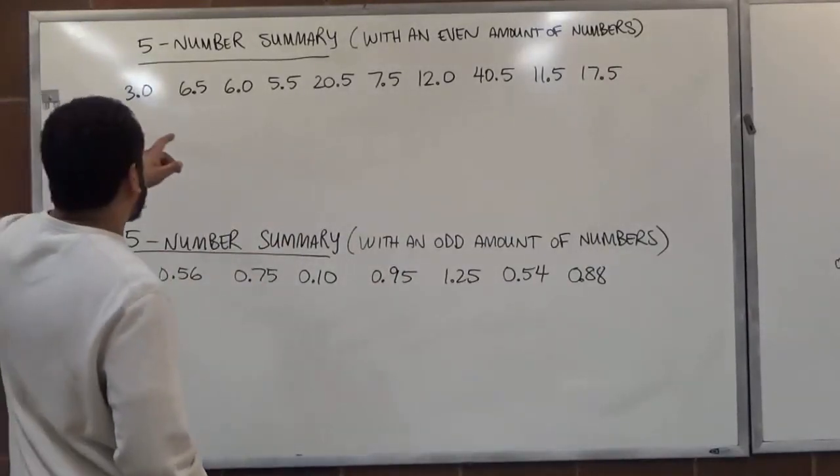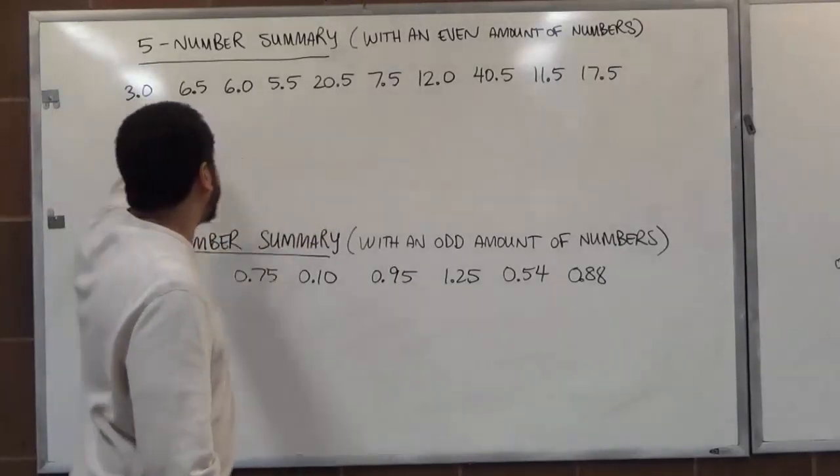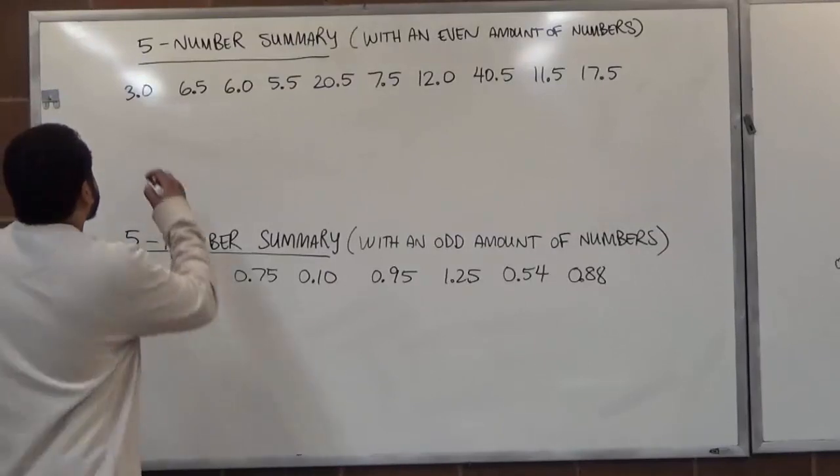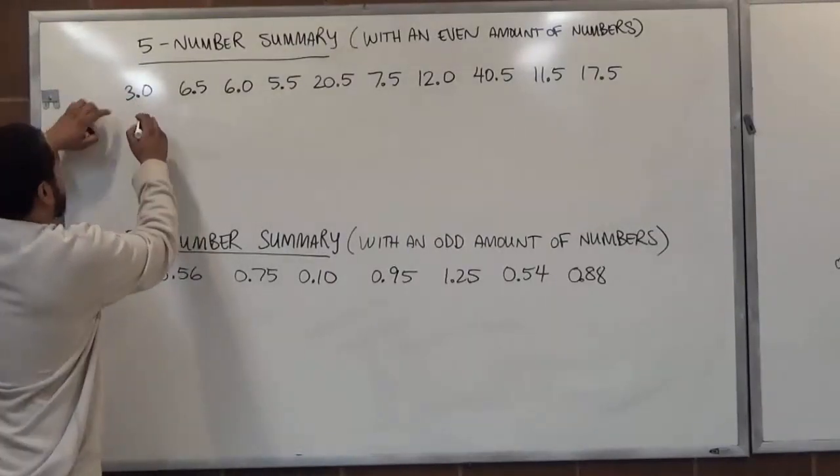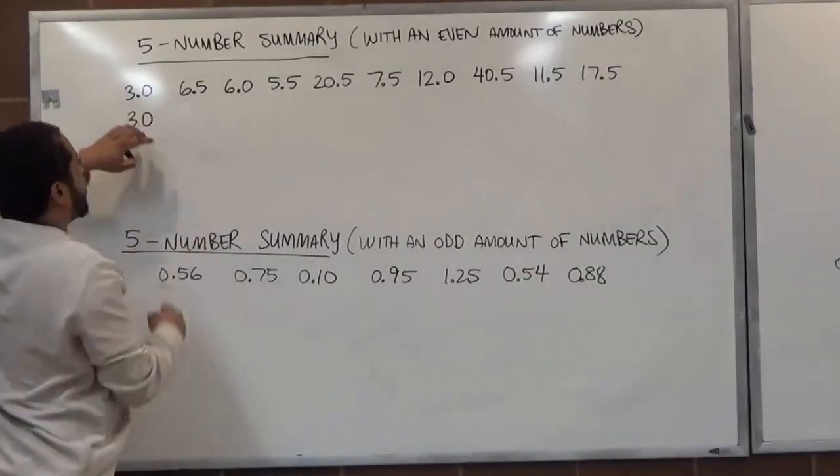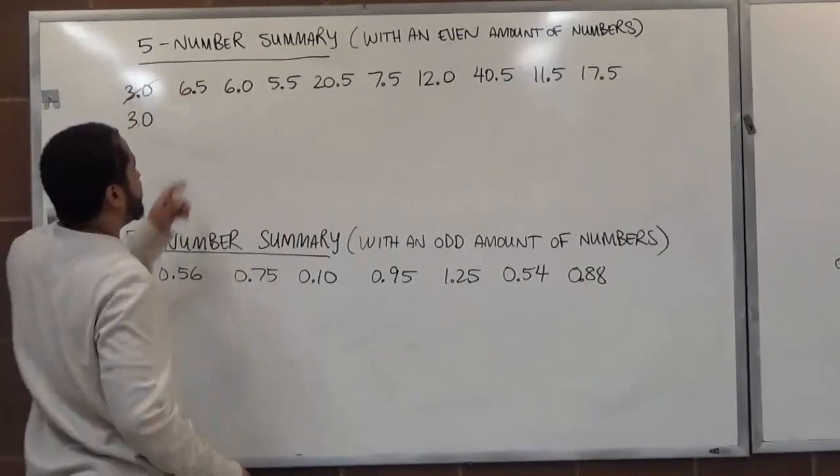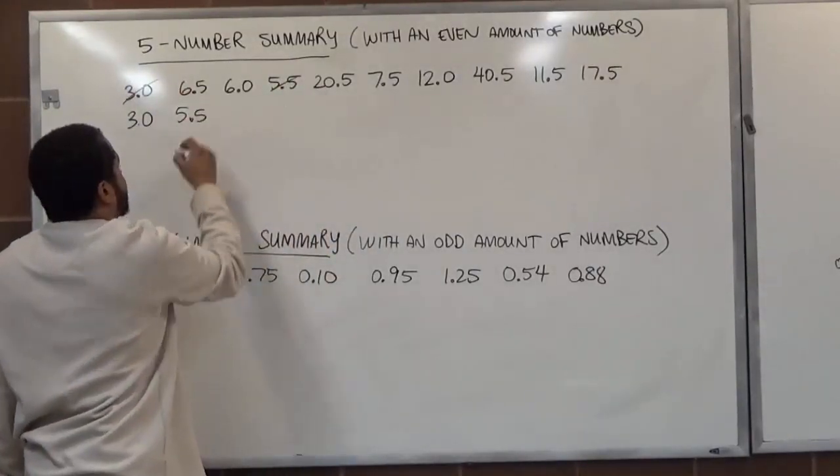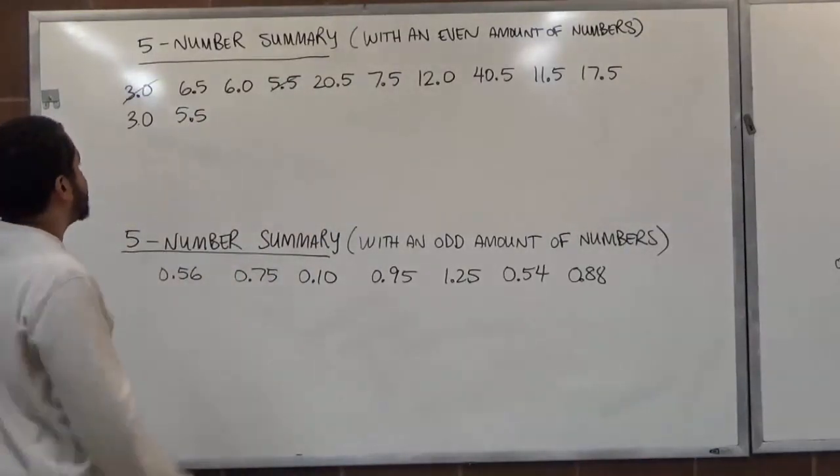So for this first problem, what we want to do is arrange them in order. We're looking for the smallest to the largest order when we're doing this. So we're going to sort them. So here we start with 3.0 is the lowest. The following number after 3.0 would be 5.5. That goes next. Following 5.5, we have 6.0 here.